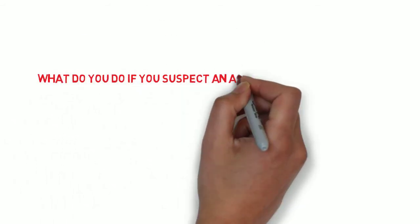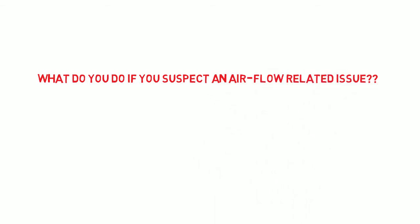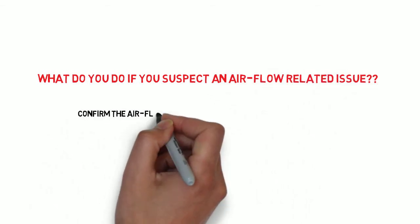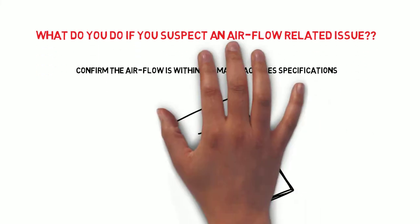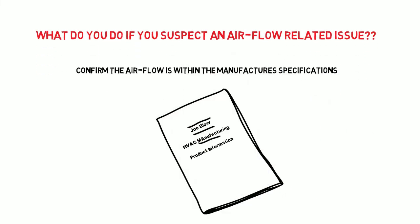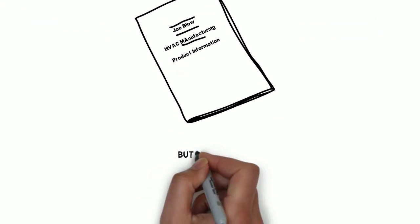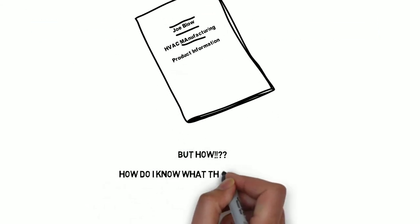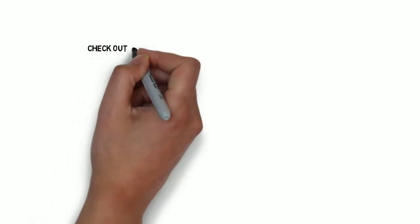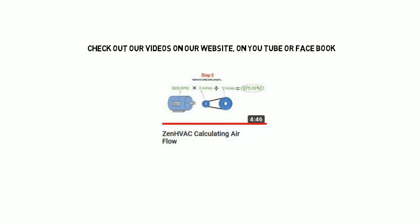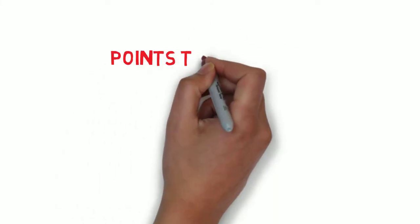What do you do if you suspect you have an air flow issue? Simple — you confirm the air flow is within the manufacturer's specifications using the manufacturer's product information. But how do you know what the air flow is? Check out our videos on our website, YouTube, or Facebook. We have a video that tells you how to calculate air flow for rooftop units and air handlers.